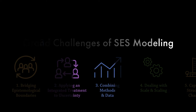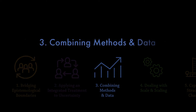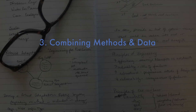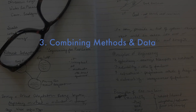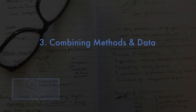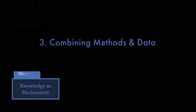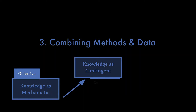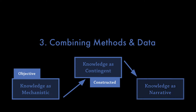The third challenge is related to integrating qualitative and quantitative data, which is almost always required. SES modeling brings together multiple disciplines, which may have different views even about what constitutes acceptable data — for example, narratives versus numbers. Some members will bring extensive qualitative information to the table, often social, while others may view qualitative data as unacceptable.